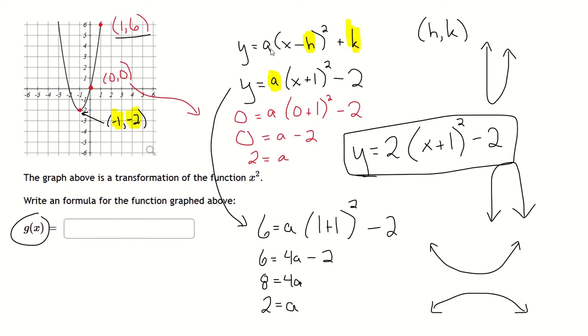And then the tricky one is getting the a value. To get the a value, you have to pick one other nice point on the graph and substitute those values in for y and x, and then solve for a. And then that'll give you your a value.